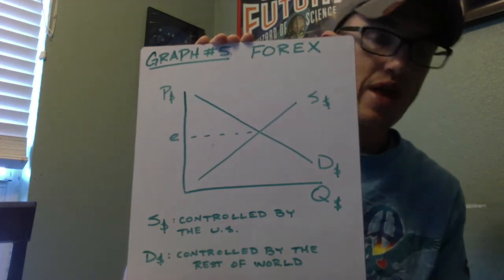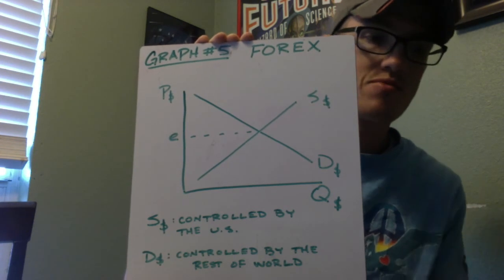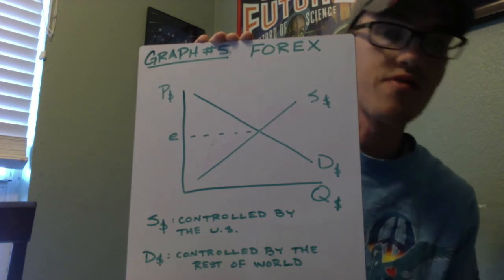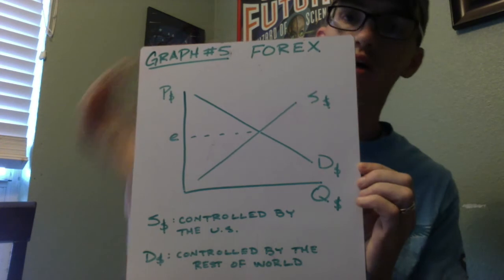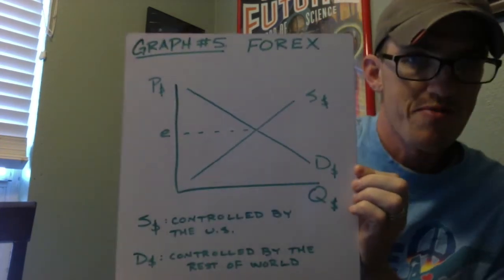And so when that happens, there is a market for those currencies. And that market will change the value of that currency. So it's a supply and demand market, like loanable funds and money market. So it works off the principles of supply and demand.